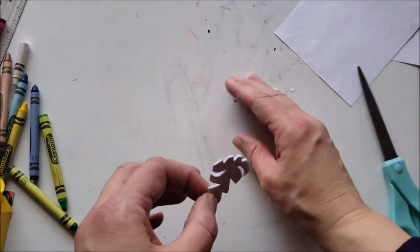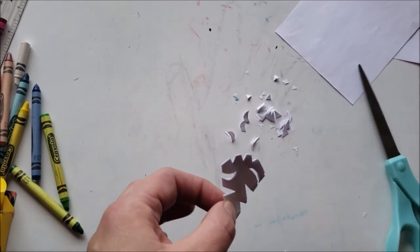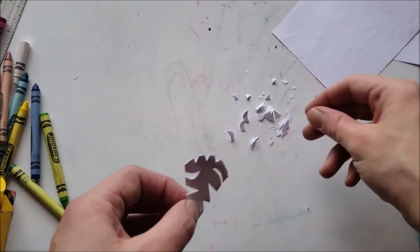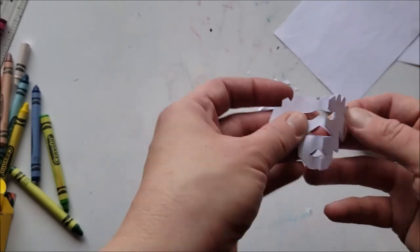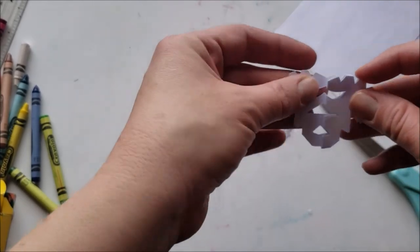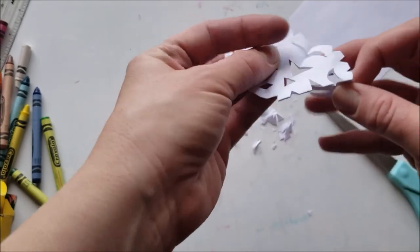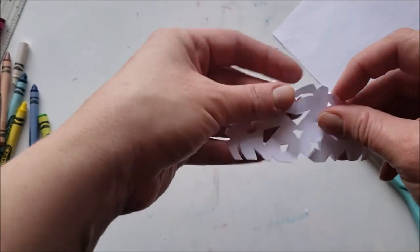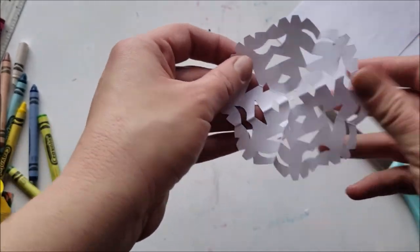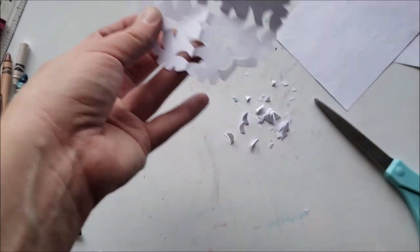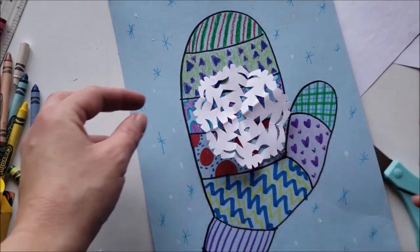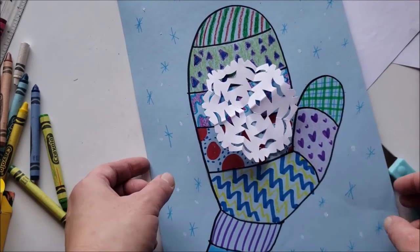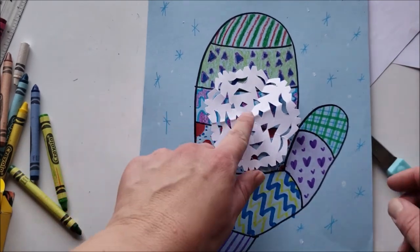You want to make sure you're working on top of something that will catch them all so that we can throw them away easily. Now I'm ready to open up my snowflake so let's start opening and see what it looks like. Very cool so far. Oh it's looking nice. All right. Oh I like that. Now you can see that's a pretty big snowflake still but it's still a pretty good size that should fit my glove.